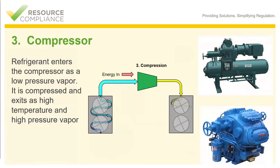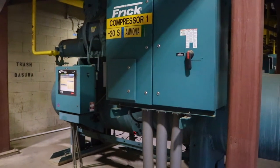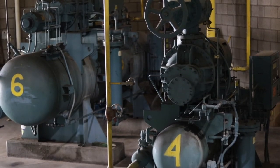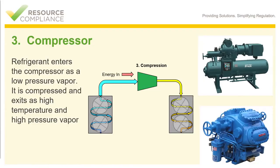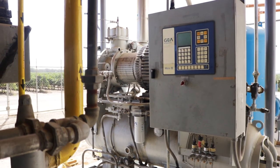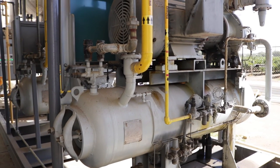Remembering that heat energy always moves from a warmer object or space to a colder object or space, the compressor in stage three serves a vital function in the refrigeration cycle. The low pressure vapor that has left the evaporative coils is still at a temperature well below the ambient atmosphere. In order to effectively reject the heat energy to the outside ambient air, we have to raise the low temperature, low pressure vapor ammonia to a high temperature, high pressure vapor. That is where the compressor comes in. The refrigerant enters the compressor as a low pressure vapor, and it is compressed and exits as a high temperature, high pressure vapor.